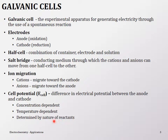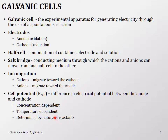Galvanic cells have electrodes, solutions, and a salt bridge — that's an important part. Ion migration occurs through the salt bridge: anions migrate toward the anode and cations toward the cathode to balance charges. Cell potential applies primarily to galvanic cells, which have spontaneous reactions — that's what you'd find in any kind of battery.